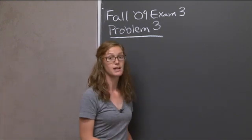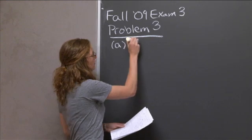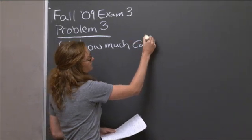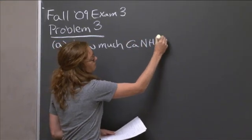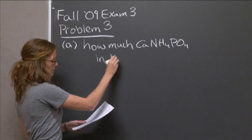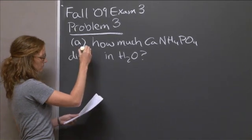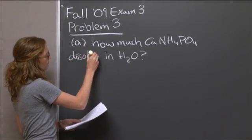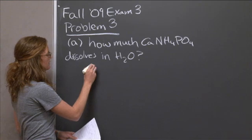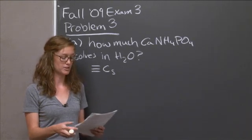So the first thing we want to do is write down what the question's asking us. This is part A. So how much calcium ammonium phosphate can dissolve in water? And we're going to call this Cs, or saturation concentration.